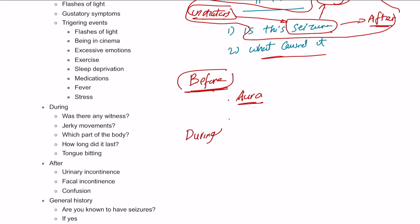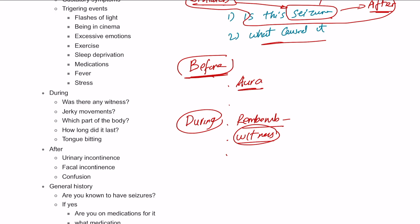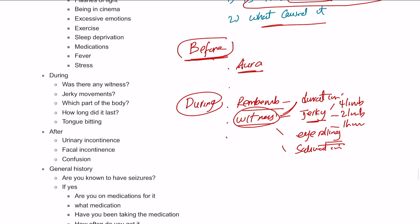During, we need to assess what happened during it. Do you remember anything during the seizure? If they do not remember, was there any witness? Who noticed you? If they said yes, did they tell you anything about it? Can you please tell me in detail? So, we need to establish the duration of the seizure. Were there any jerky movements? And if there was, is it four limbs, two limbs, or one limb? Were there any eye rolling? Were there salivation? Were there secretions from anywhere else? Were there any tongue biting as well? So, all of these symptoms we need to ask during the seizure.